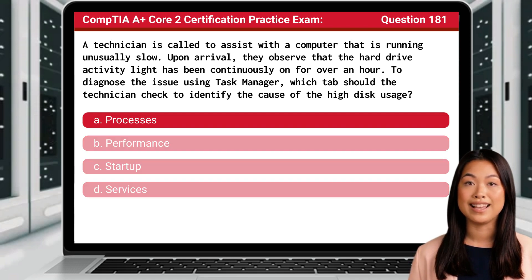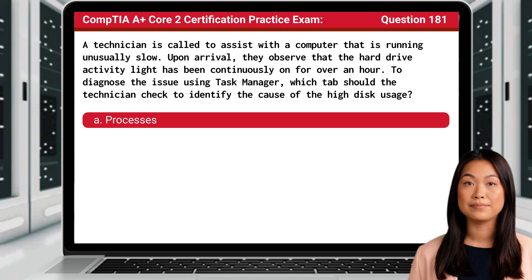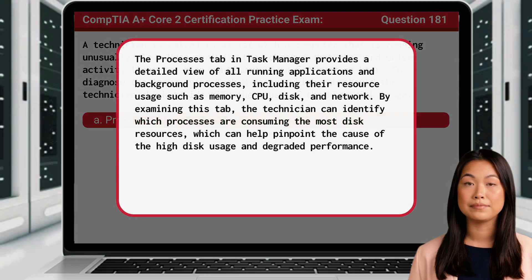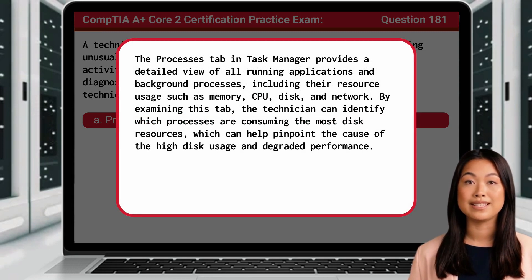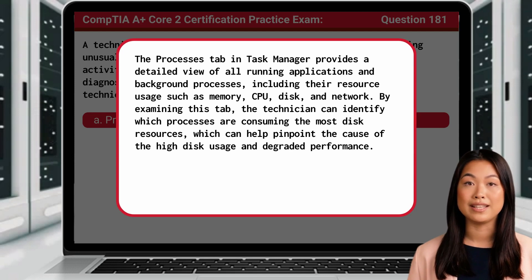The answer is A. Processes. The Processes tab in Task Manager provides a detailed view of all running applications and background processes, including their resource usage such as memory, CPU, disk, and network. By examining this tab, the technician can identify which processes are consuming the most disk resources, which can help pinpoint the cause of the high disk usage and degraded performance.